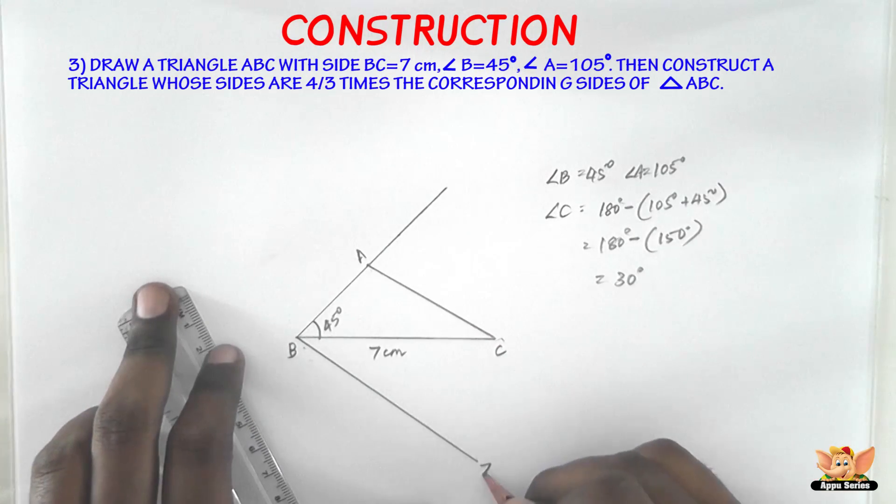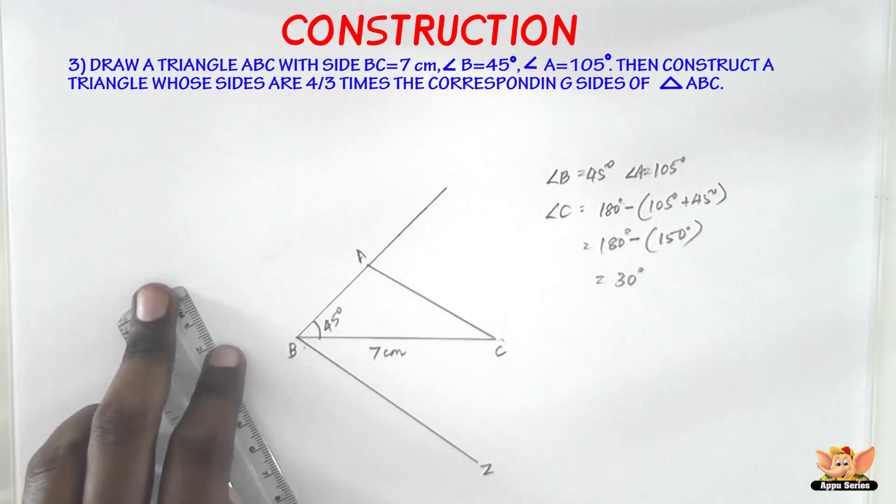So I'm drawing it like this. So I've got Z here. C, B, Z. This is an acute angle.